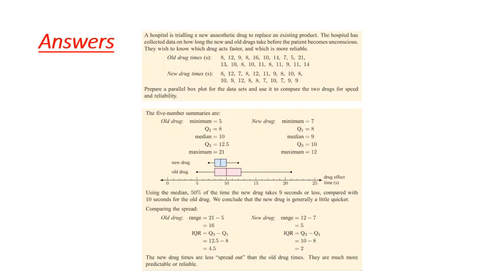So here are the answers. Again, we've got our question at the top. First thing we needed to do was create our five number summary. And as you can see here, we've got the old drug and the new drug, the five number summaries here, and we've got a box plot.